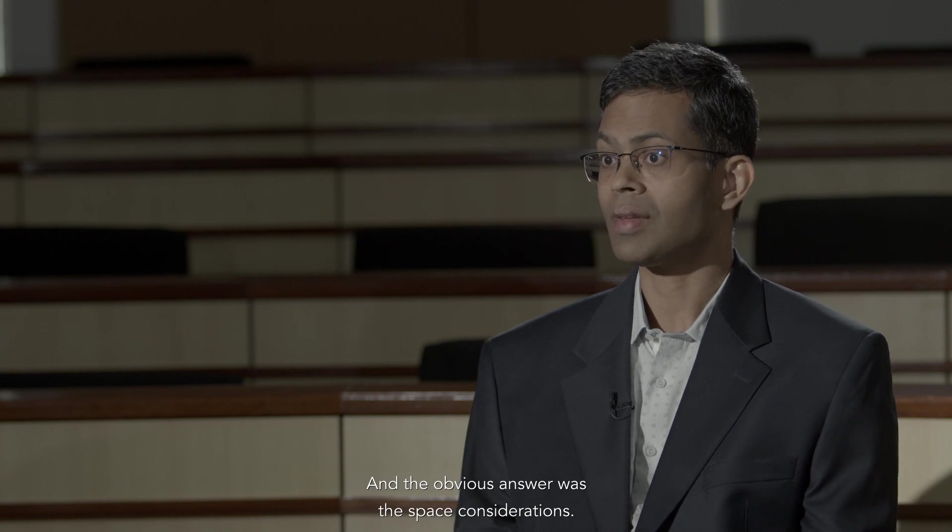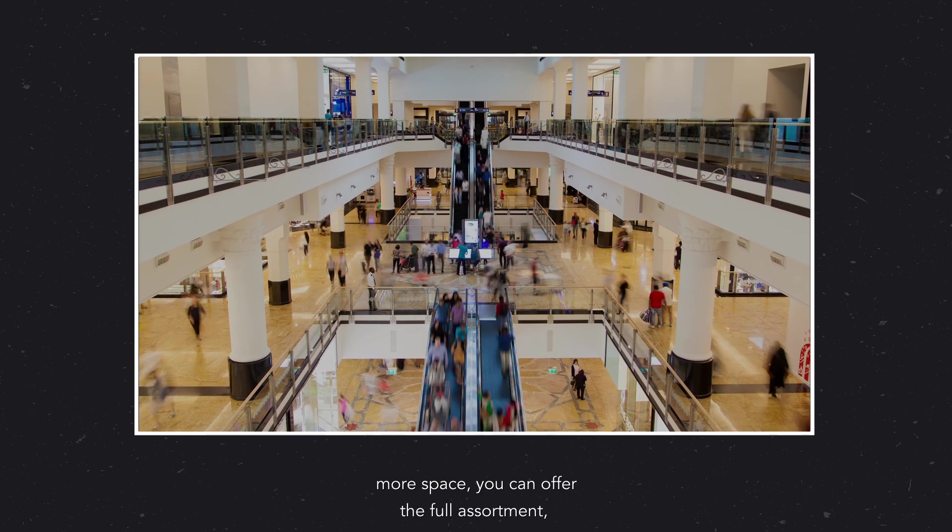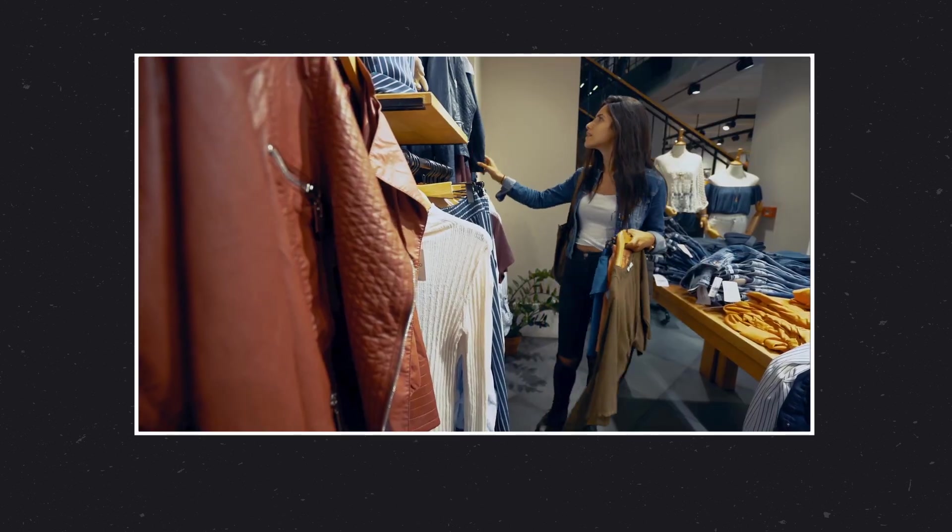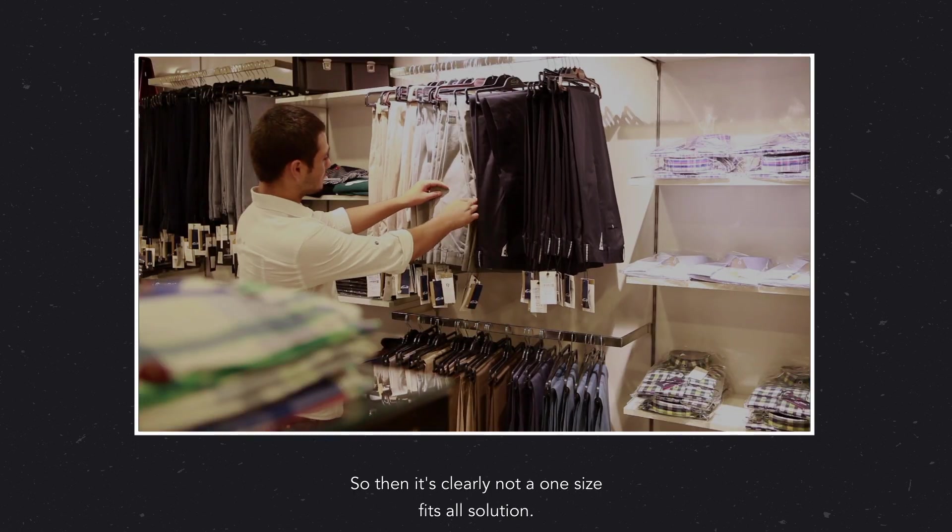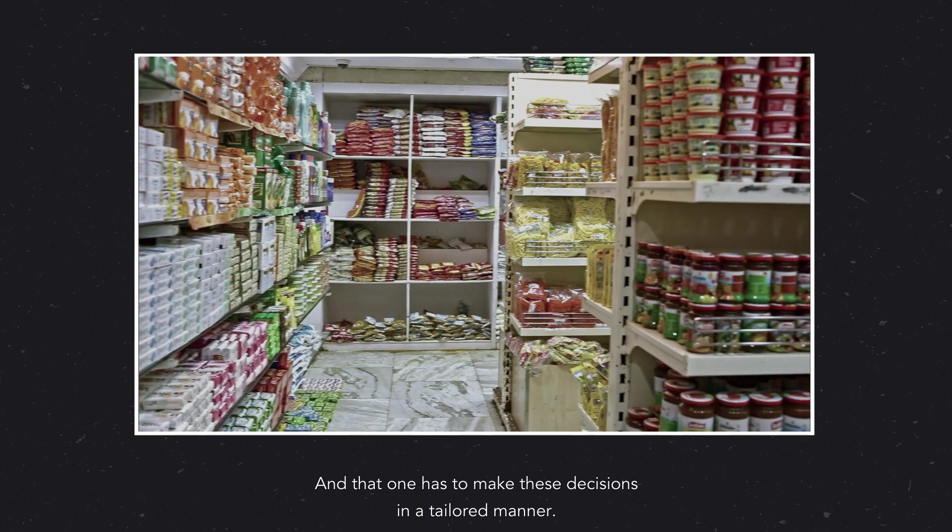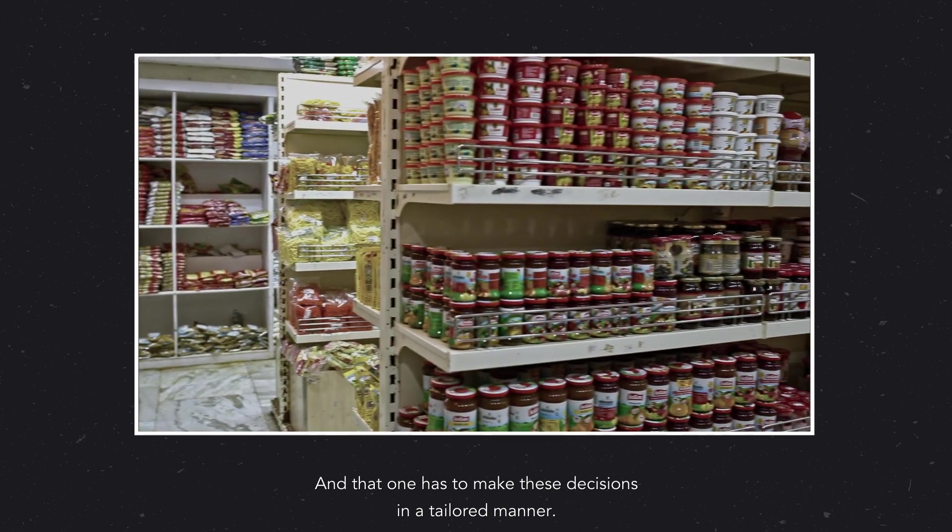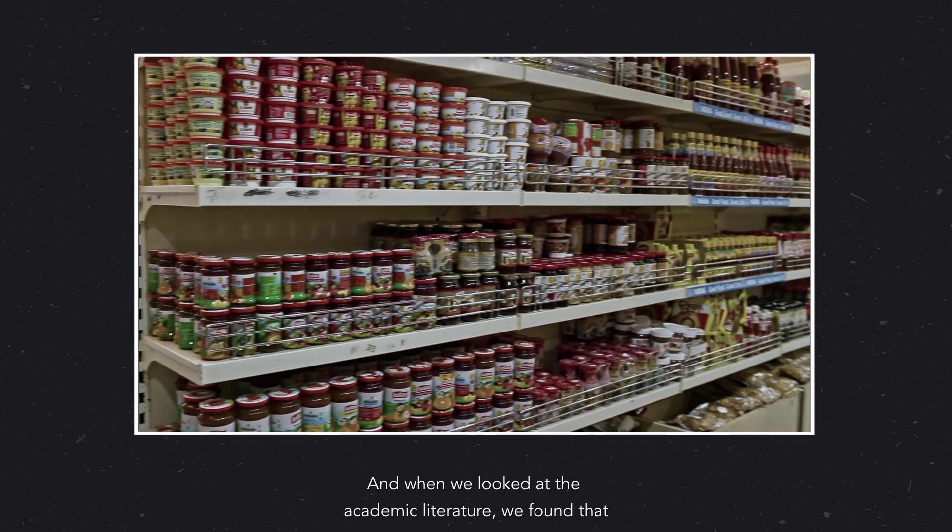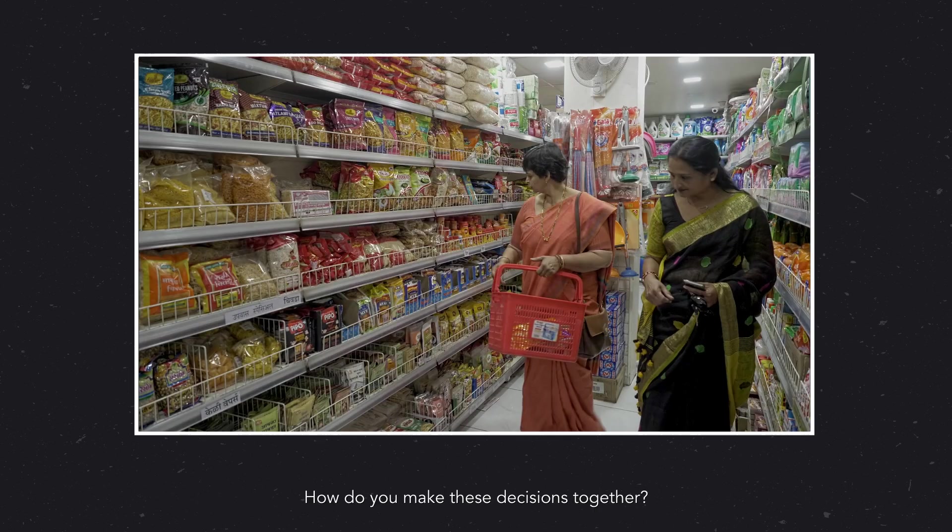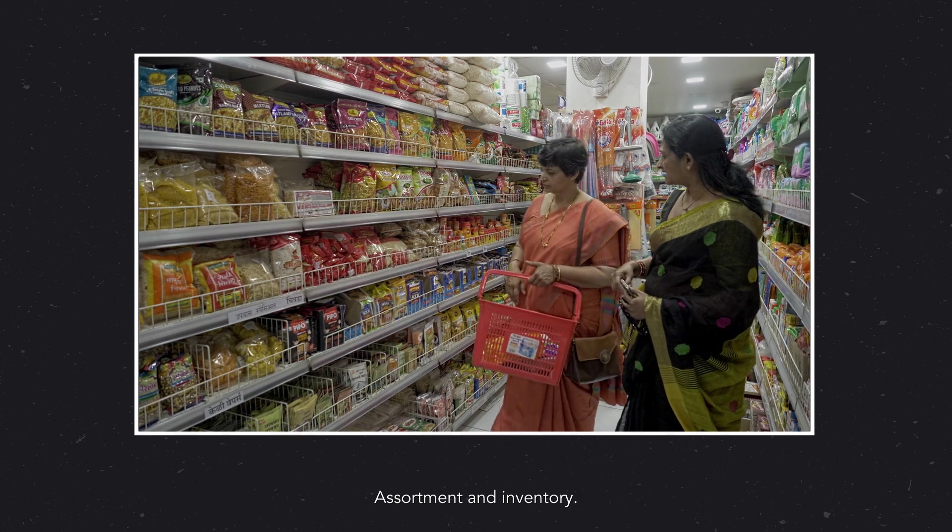And the obvious answer was inventory, the space consideration. Obviously, because you have larger stores, more space, you can offer the full assortment. Smaller stores, you can't. So then it's clearly not a one-size-fits-all solution in that one has to make these decisions in a tailored manner. And when we looked at the academic literature, we found that there was very little on this topic. How do you make these decisions together, assortment and inventory?